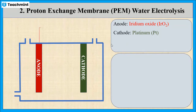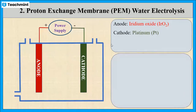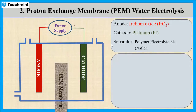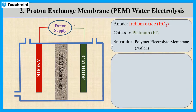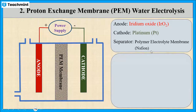These two electrodes are connected to the power supply and separated by a polymer electrolyte membrane, that is PEM membrane such as Nafion. This membrane acts as both gas separator and the electrolyte.